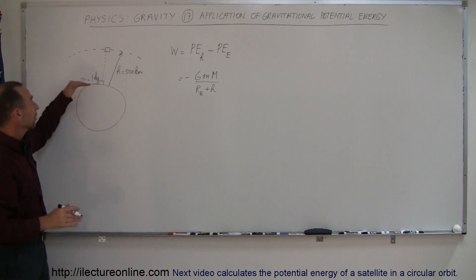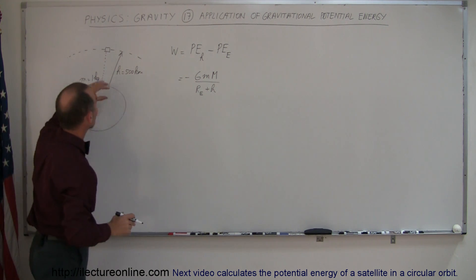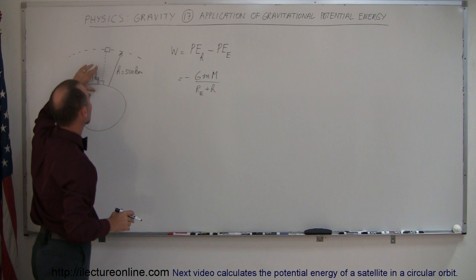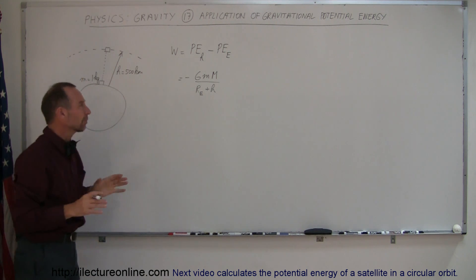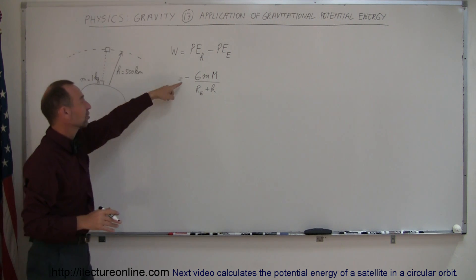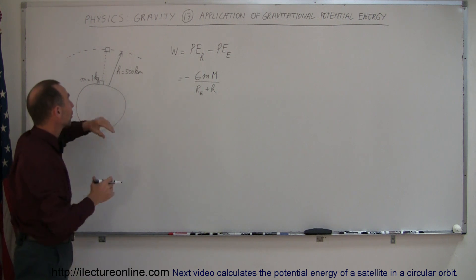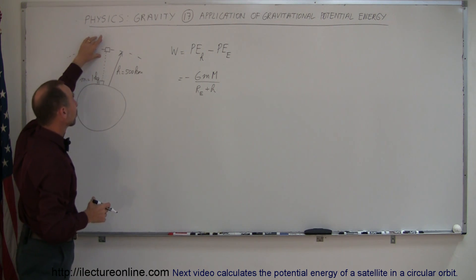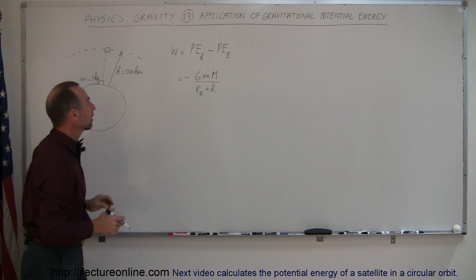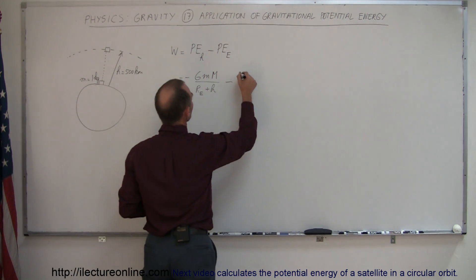And now we subtract from that the energy that it has down on the Earth, because the energy here should be greater than the energy down there. Now that's a little confusing sometimes, because the energies are always expressed in negative quantities, but even though they express negative quantities, you know the potential energy there is greater than the potential energy down here.